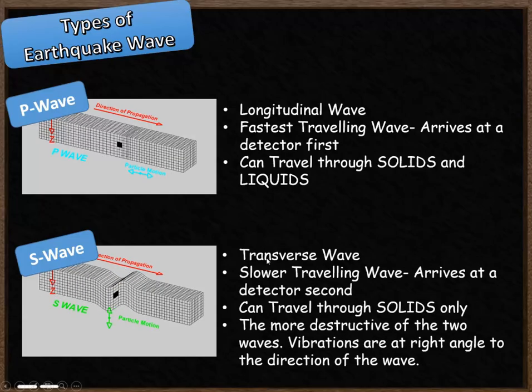The S wave, or secondary wave, is a transverse wave. That means it has an S-shaped pattern. And as a result, the particles move perpendicular to, or at right angles to, the way that the earthquake wave is travelling.